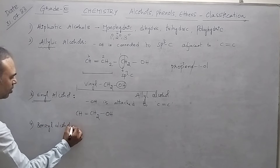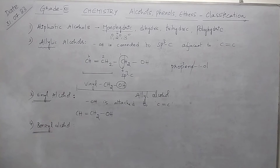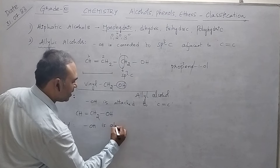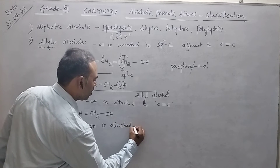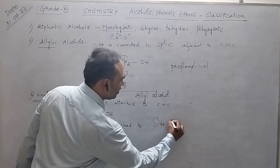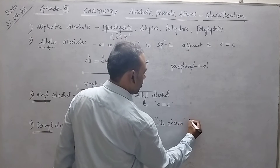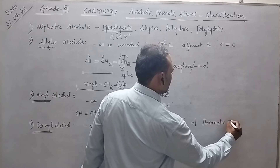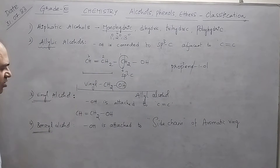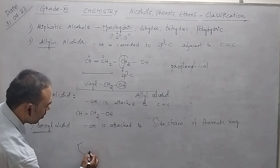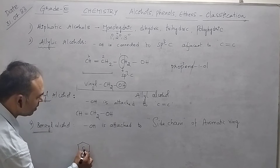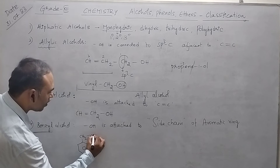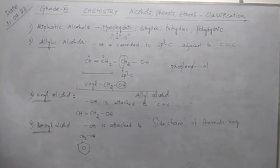The fourth type is benzylic alcohol (or benzyl alcohol). Here the OH group is attached to the side chain of an aromatic ring. For example, benzene with a –CH2OH side chain gives benzyl alcohol. You can also extend the side chain by one more carbon: benzene–CH2–CH2OH.